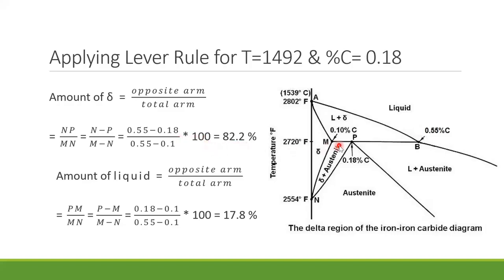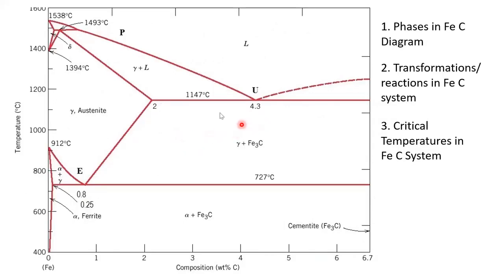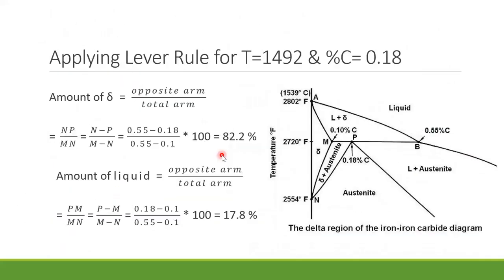Using the lever rule: delta is 82% and liquid is 18% at this point. For liquid, the opposite arm is MP (P minus M), divided by MN (total arm). So at this specific composition of 0.18% carbon, about 82% delta and 18% liquid are present. This is how you apply the lever rule.